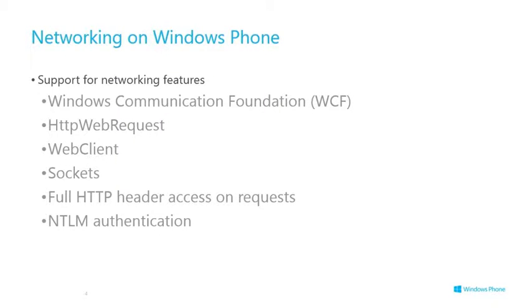So: networking on Windows Phone. First, what we have in terms of support for networking features — good support for WCF services in all different flavors, RESTful and SOAP. HttpWebRequest and WebClient are the low-level APIs. Sockets as mentioned. We've got full HTTP header access on requests — something we didn't have when Windows Phone first came out — and full support for NTLM and Kerberos authentication in Windows Phone 8.